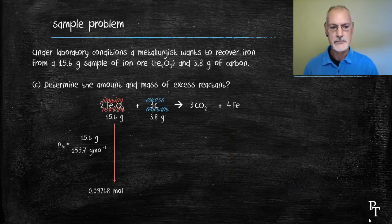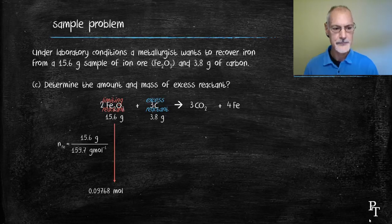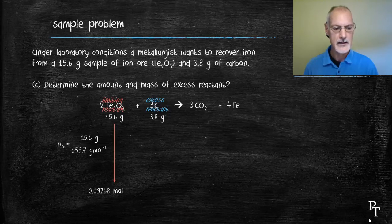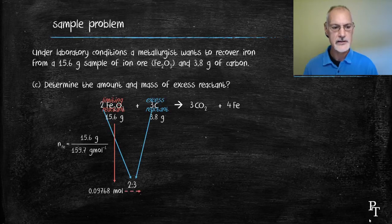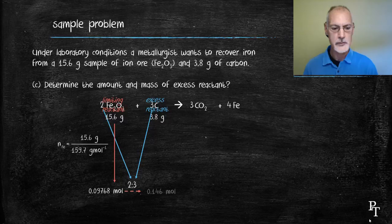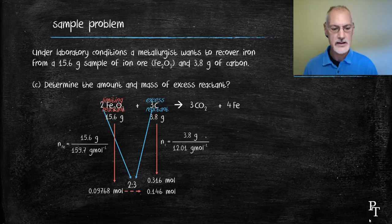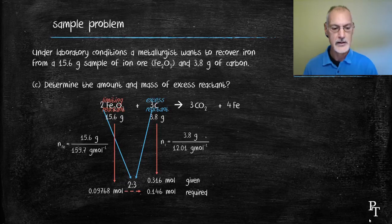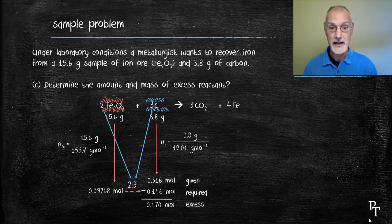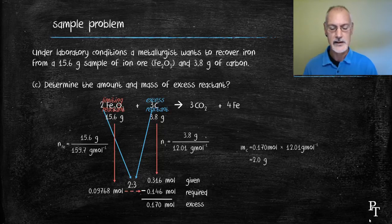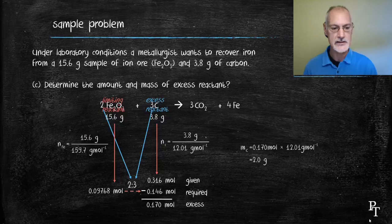Finally, I want to determine the amount and mass of my excess reagent, or excess reactant. So again, I have the information here for my limiting reagent, converting the 15.6 grams into moles. The ratio that exists between my limiting reagent and my excess reagent is 2 to 3. Hence, 0.146 moles would be required. How much am I actually given? Well, I have 3.8 grams, and I divide that by the molar mass of carbon, and I'm actually given 0.316 moles. I require 0.146. I subtract those, and that gives me my amount of excess reagent. If I wish to convert that into a mass, I use the molar mass of carbon, and I come up with about 2 grams. I'm matching significant digits with the 3.8.